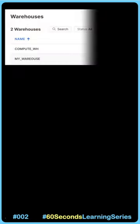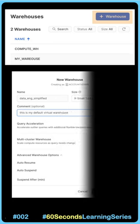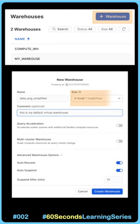If you don't see the warehouse add button, it means you don't have the necessary privileges. When created, Snowflake considers extra small as the default virtual warehouse size. Even if you run a DDL statement, the same is applied.